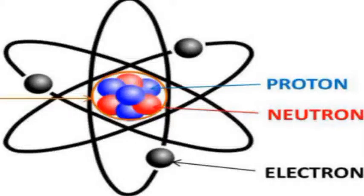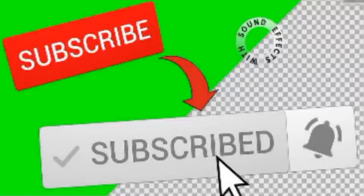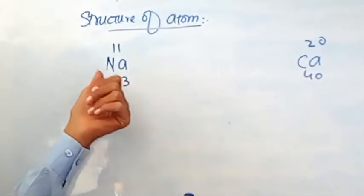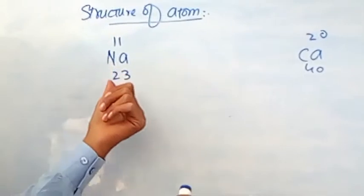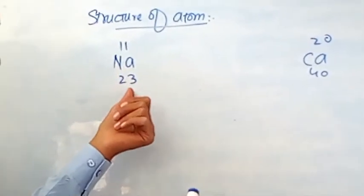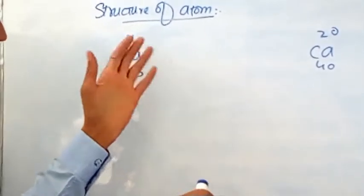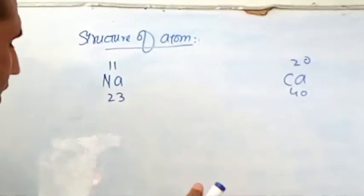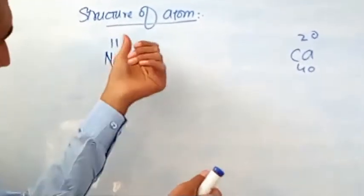Good morning Rahim. Today our topic is the structure of the atom — how we can make a structure of an atom, with electrons, protons, and neutrons in the nucleus.